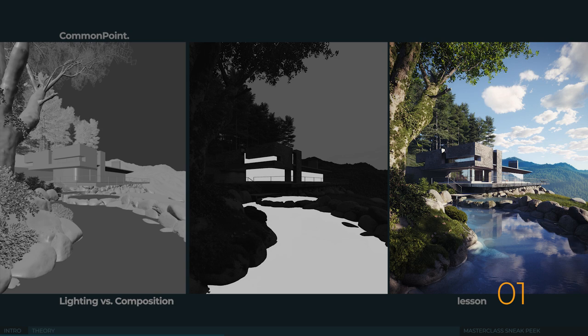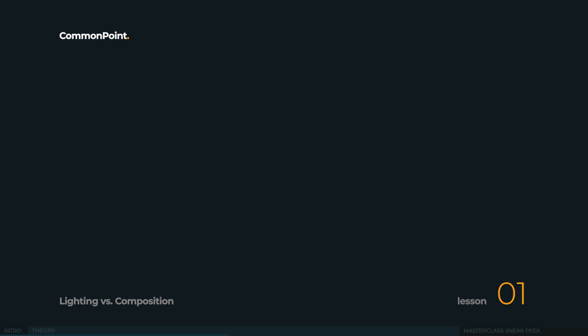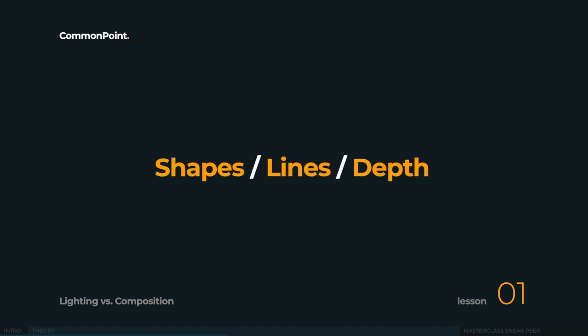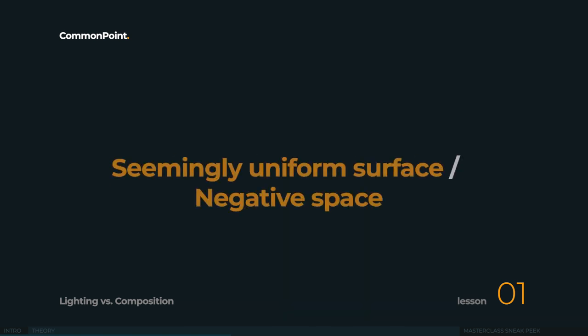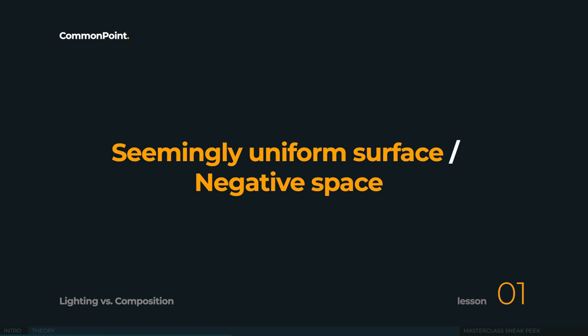So let's dive into composition and listen to what it is telling us. We won't teach you how to build composition from scratch, but rather investigate what is already there in your images. We'll touch base on five different aspects: shapes, lines, depth, and two more kind of interesting ones — seemingly uniform surface and negative space.